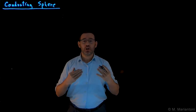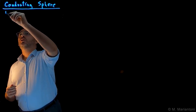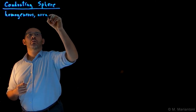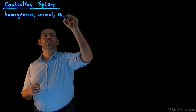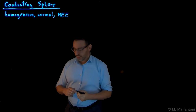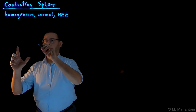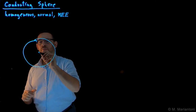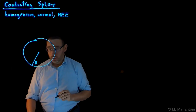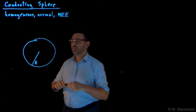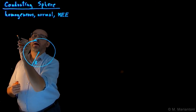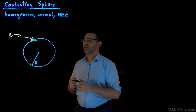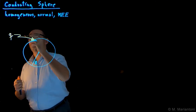We assume that the sphere is in macroscopic electrostatic equilibrium. Let us sketch our sphere here. This is the center of the sphere, characterized by a radius capital R. We further assume that this sphere is charged, for example with a positive charge — we sketch it in orange — so we apply a positive charge q to this sphere, distributed in a uniform fashion.